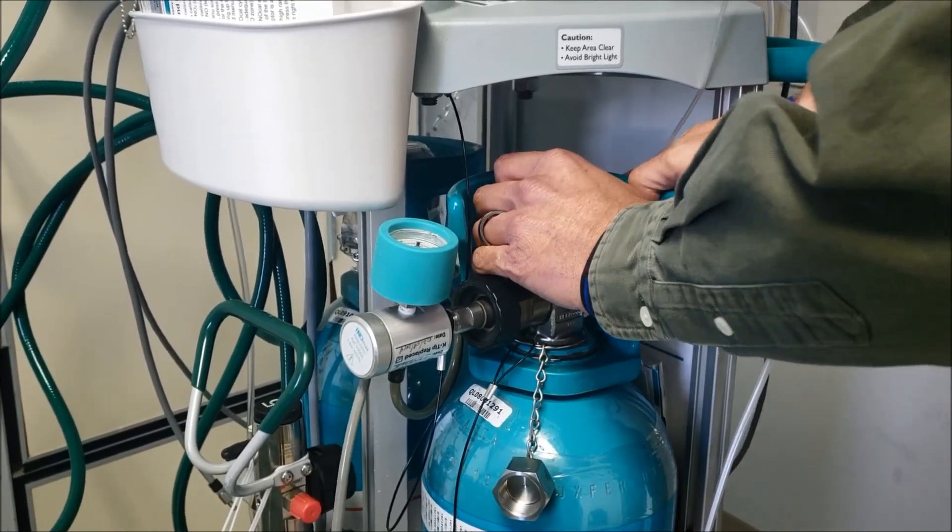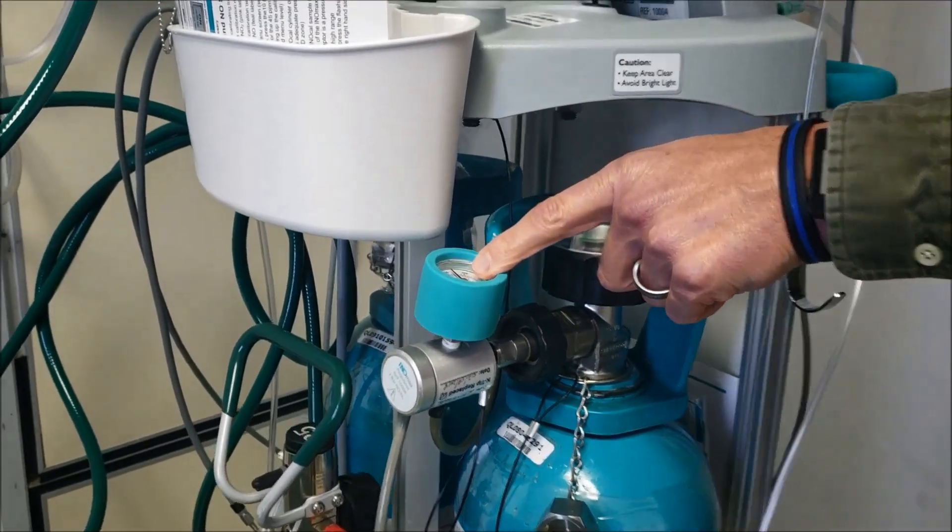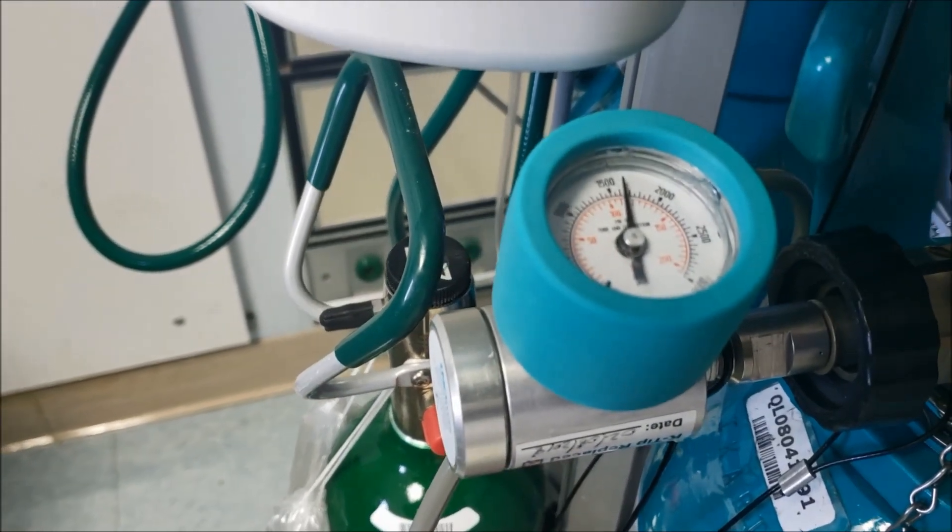So we're going to turn the tank on just like a normal tank. You're going to get a pressure on your pressure manometer here. We're showing about 1700 PSI on that tank.